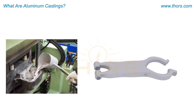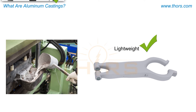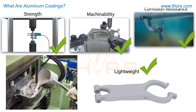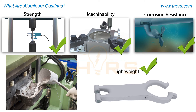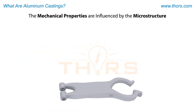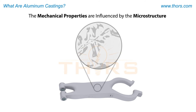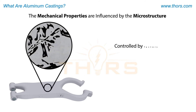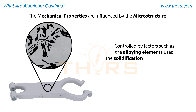Aluminum alloys are typically considered lightweight and to have good mechanical properties such as strength, as well as excellent machinability and good corrosion resistance. The mechanical properties of aluminum alloys are directly influenced by the microstructure of the metal, which is controlled by factors such as the alloying elements used, the solidification rate of the casting, and the heat treating processes performed after solidification.